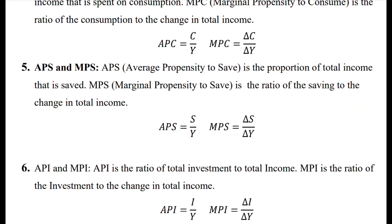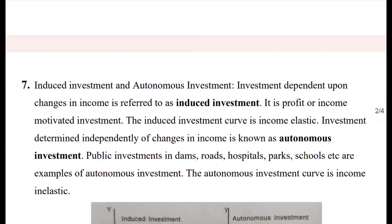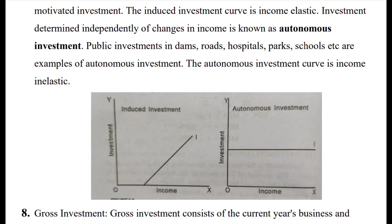MPI — average propensity to invest — is the ratio of total investment to total income. Marginal propensity to invest is the ratio of change in investment divided by change in income. Induced investment is investment dependent upon income or profit. Autonomous investment is investment not dependent on income — it is income-inelastic, while induced investment is income-elastic.